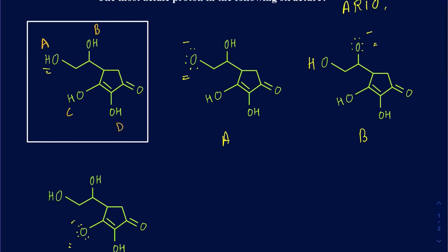Sometimes you focus on the resonance and sometimes on the inductive, depending on which one you really have. This is just the rough order of ARIO. Sometimes the resonance and inductive may flip back and forth, but usually resonance takes over the inductive effect — though not always. So let's focus on whether there are any resonance structures for any of those conjugate bases.